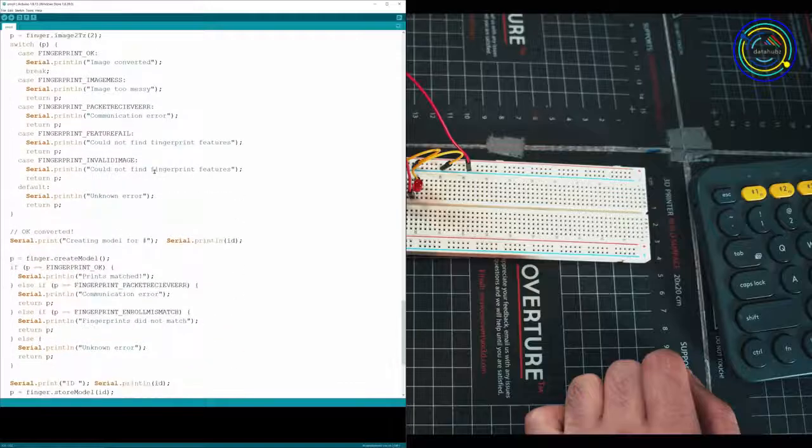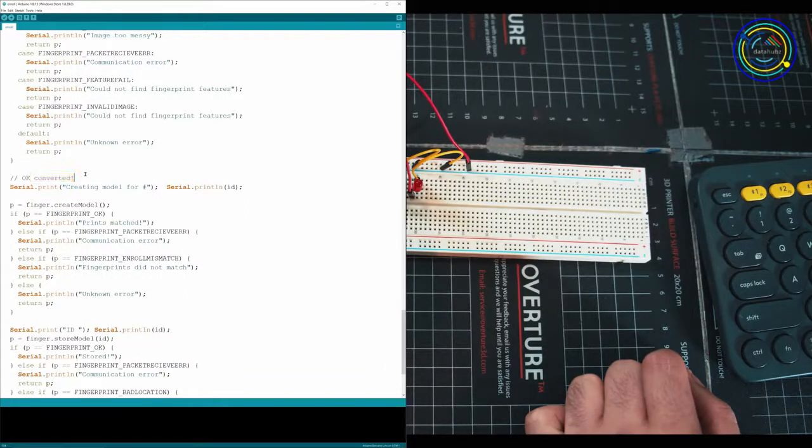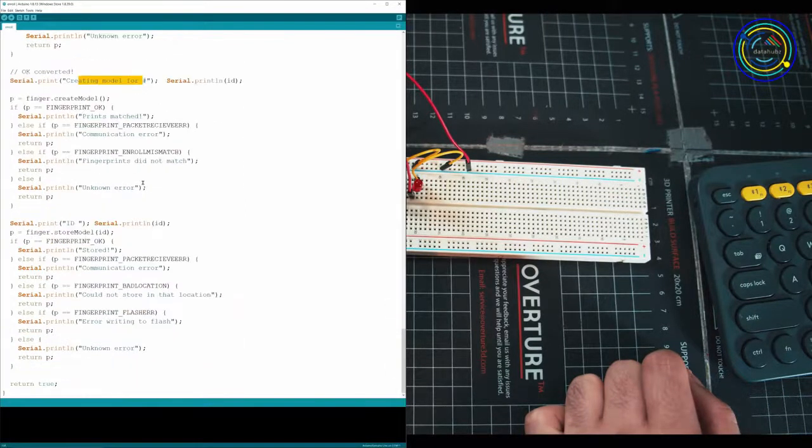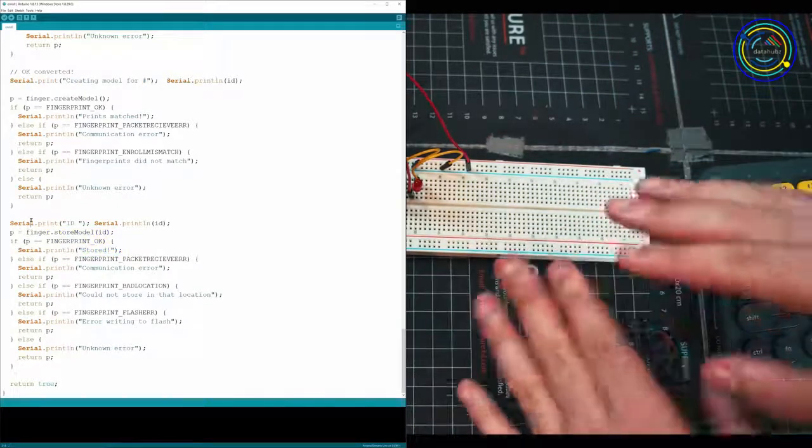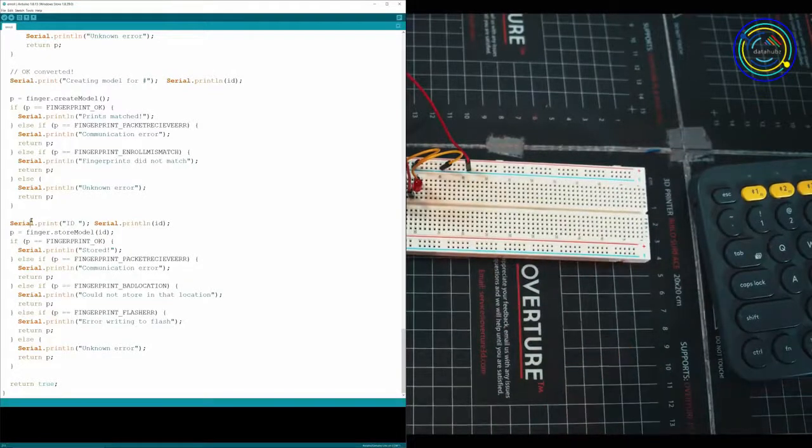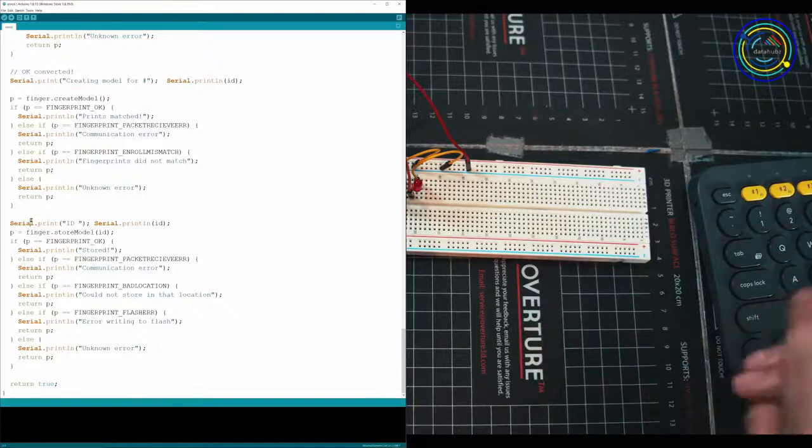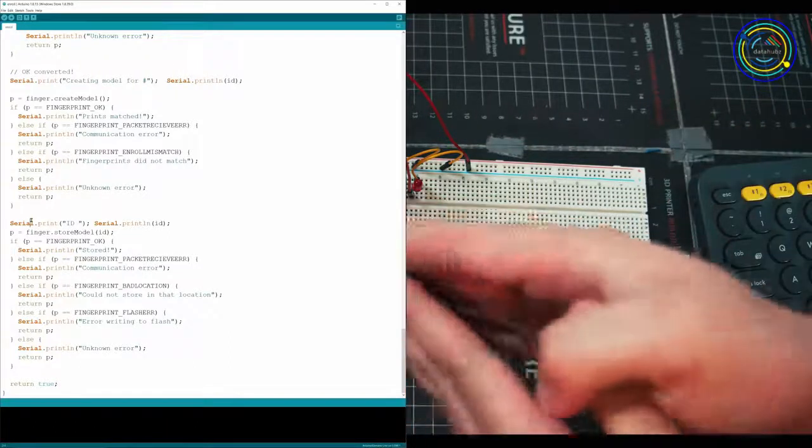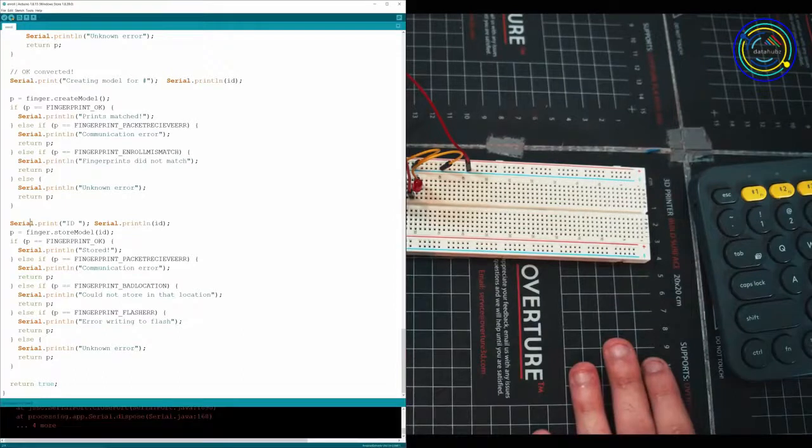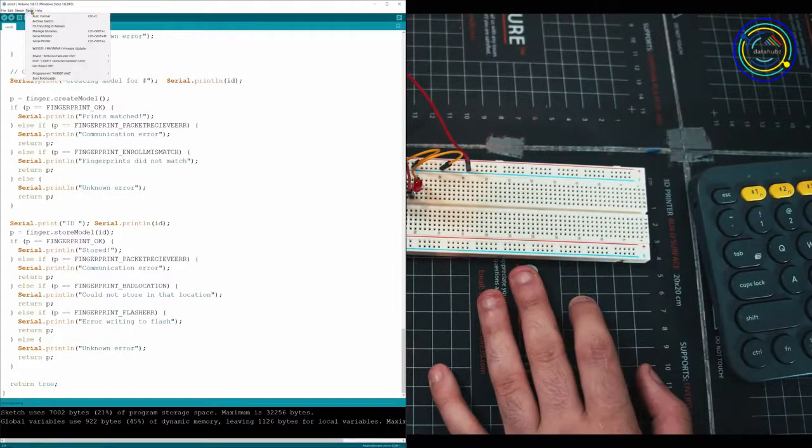So once that's done we can see at the bottom here where we can see OK converted, creating model for a number, and then that ID is going to get stored right down here. It might be a little complicated. I recommend you take a minute to go and read through this whole program and understand each step, but I'm not going to do that right now. Right now we're just focused on getting a fingerprint on here. So go ahead and upload that to your Arduino.